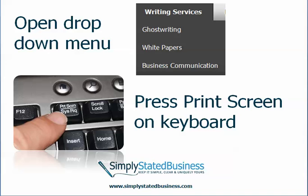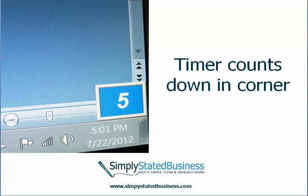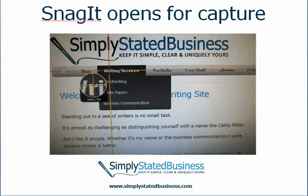So then you go back to your document, you right-click, open your drop-down menu, and then press the Print Screen on your keyboard. In the lower right-hand corner of your monitor you'll see a countdown so you know exactly how much time you have to capture that image. So if you lose your drop-down menu you can go back and do a right-click and get your drop-down menu again, and then Snagit will open it for the capture.